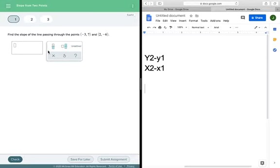Find the slope of the line passing through the points (-3, 7) and (2, -6). The first thing we got to do is figure out what's our y2, y1, x2, x1. Generally speaking, until you're really secure with this, just take the first set of points and make this one x1, make that one y1, and then make this x2, y2.